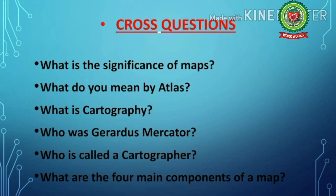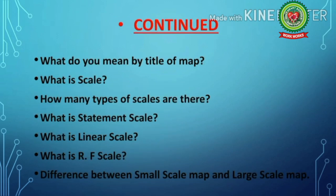Number one: what is the significance of maps? Number two: what do you mean by atlas? Number three: what is cartography? Number four: who was Jared's Mercator? Number five: who is called a cartographer? Number six: what are the four main components of a map? Number seven: what do you mean by title of map? Number eight: what is scale? Number nine: how many types of scales are there? Number ten: what is statement scale? Number eleven: what is linear scale? Number twelve: what is RF scale? Number thirteen: difference between small scale map and large scale map.